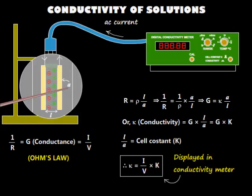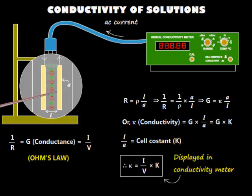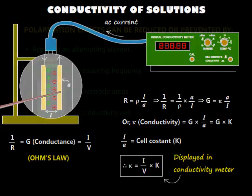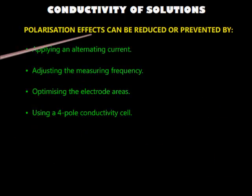While measuring conductivity, we should keep in mind that the ions of the solution may chemically interact with the electrodes, causing error in conductivity measurements due to polarization. This effect is reduced or prevented by certain methods.